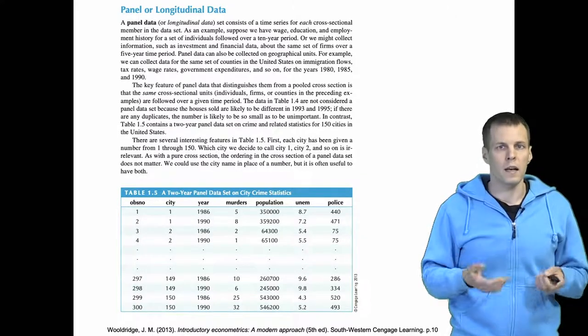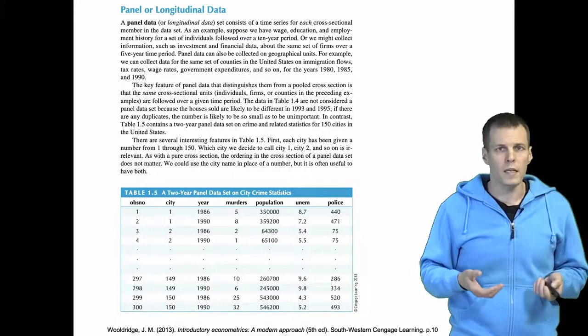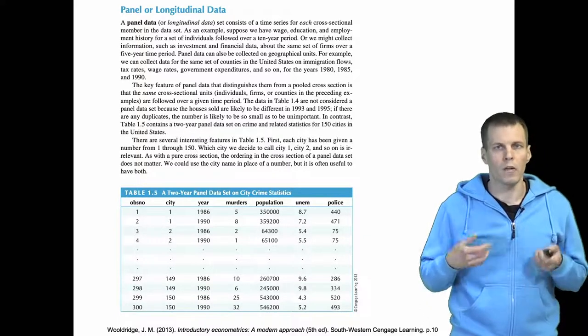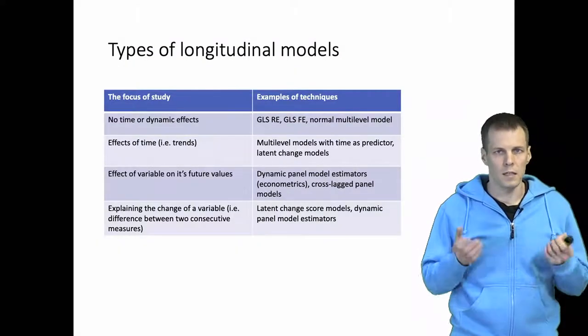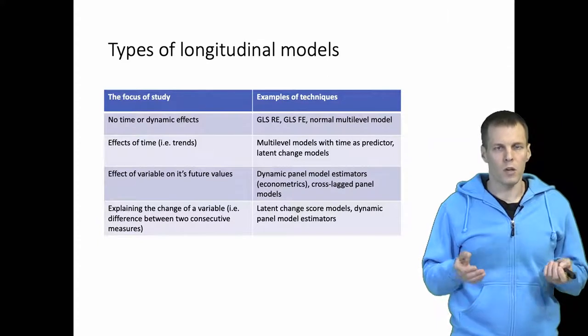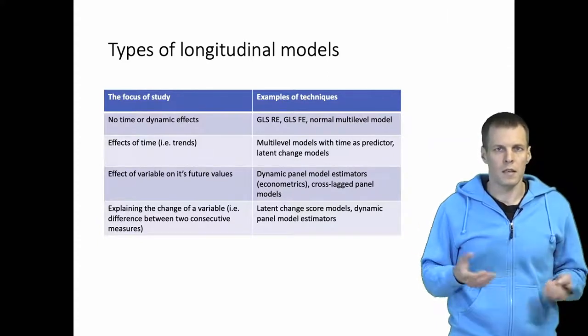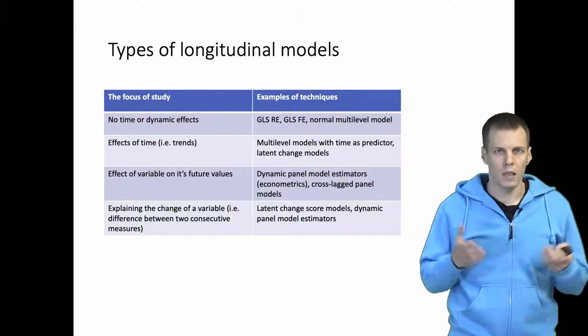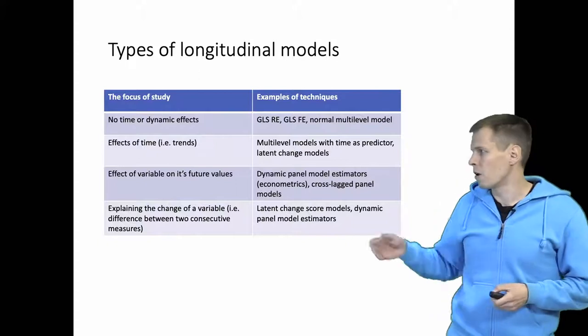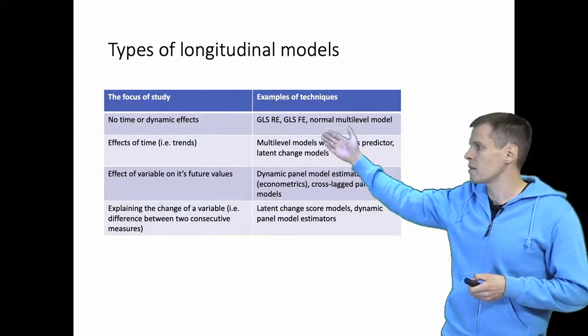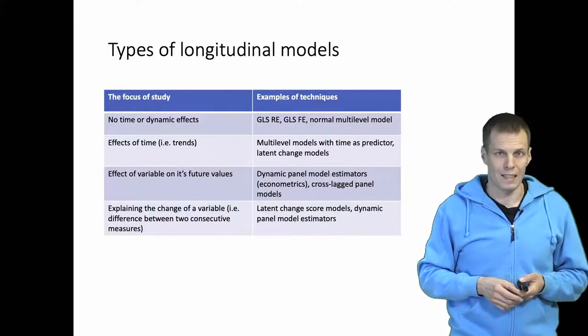So how do we then analyze this kind of data? There are a couple of different ways depending on what we are interested in. The simplest possible way to analyze this kind of data set is simply to ignore the time dimension. So simply assume that this is just a multi-level data set; the time index does not really make a difference if we could use GLS-RE, GLS-FE, or just normal multi-level model for analyzing the data.